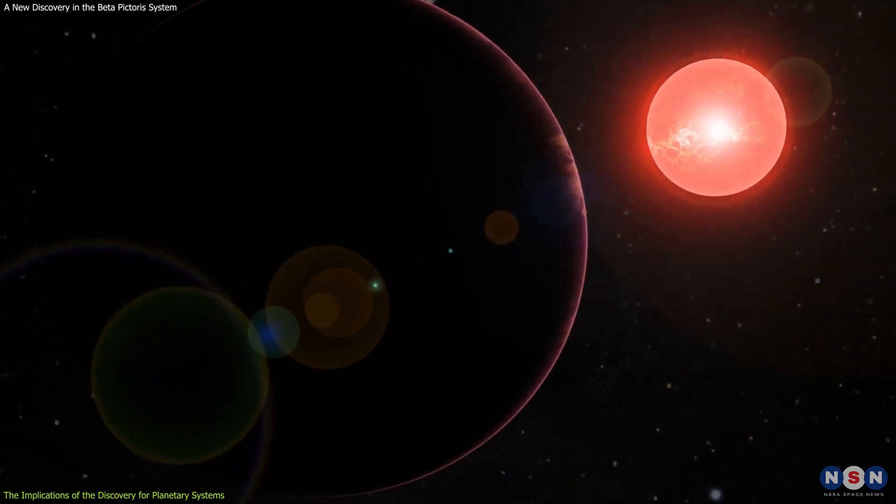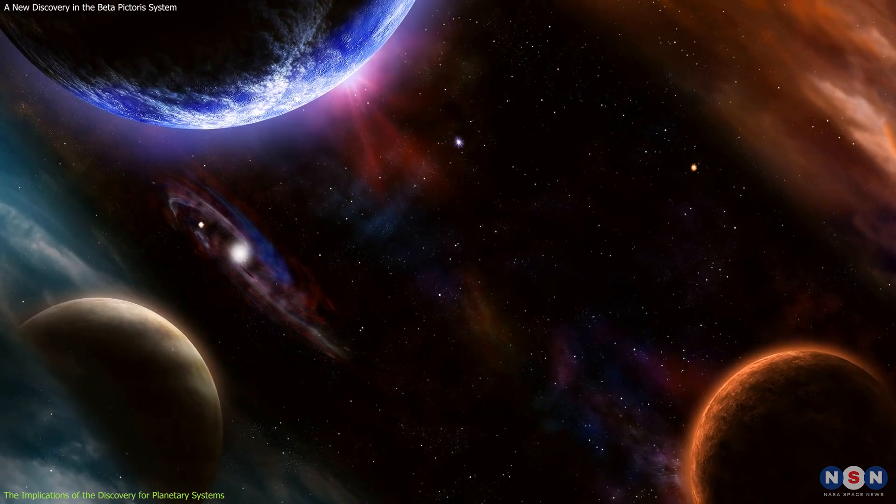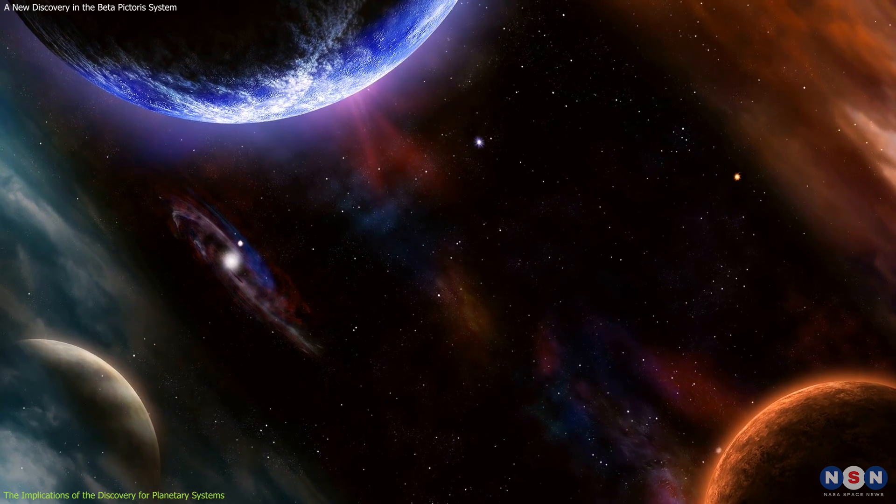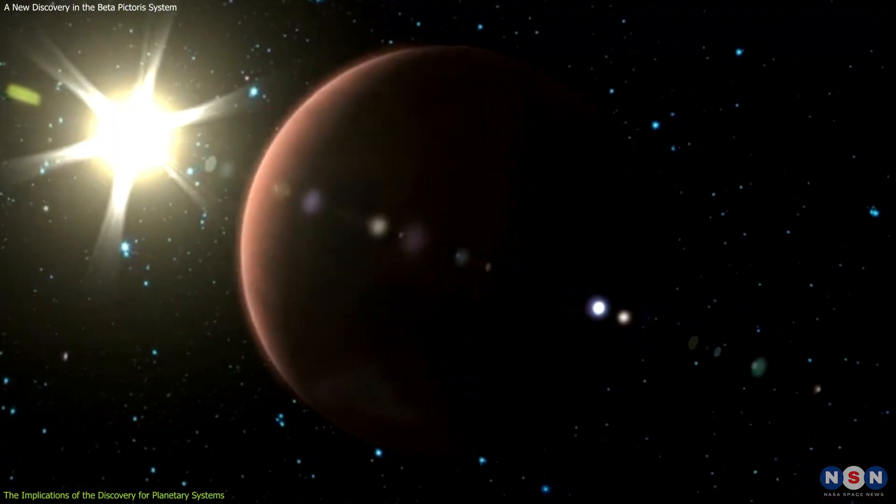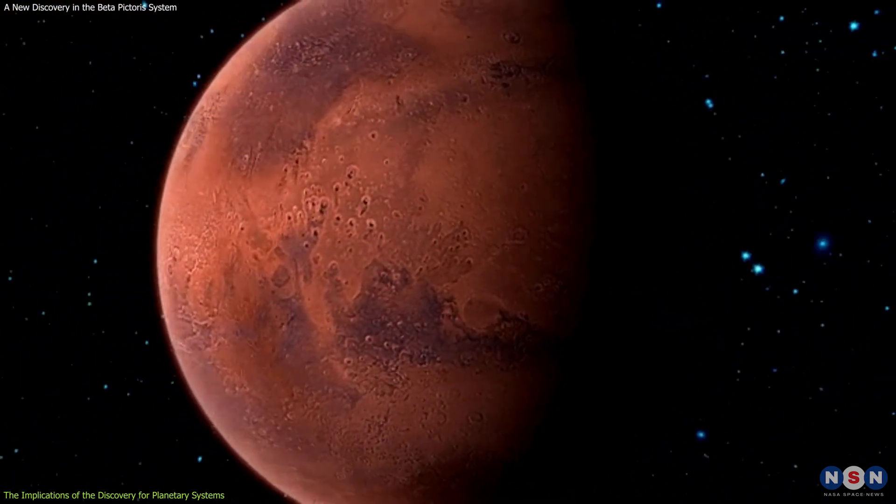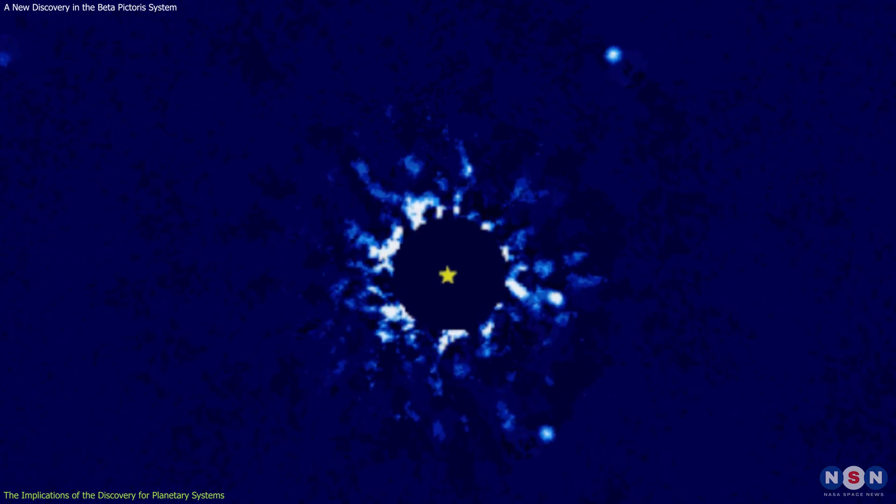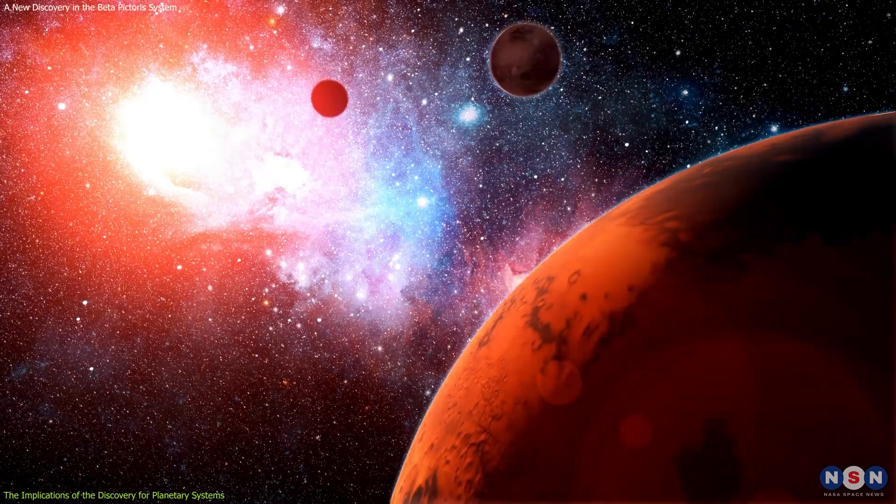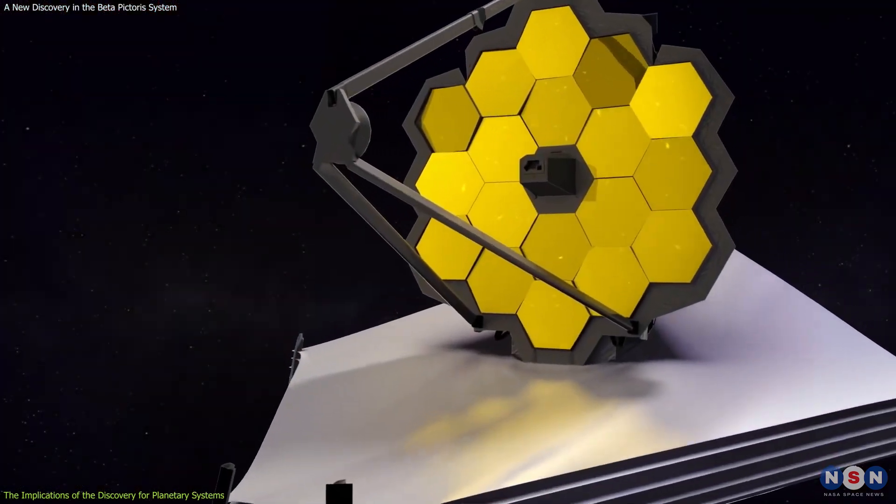However, studying these systems is not easy. They are often faint, obscured, or distorted by the interstellar medium, the dust and gas between the stars. They are also subject to change, as new events and interactions may occur at any time. Therefore, we need to observe them frequently, and with different instruments, to capture their variability and diversity. Webb is not the only telescope that can do this.